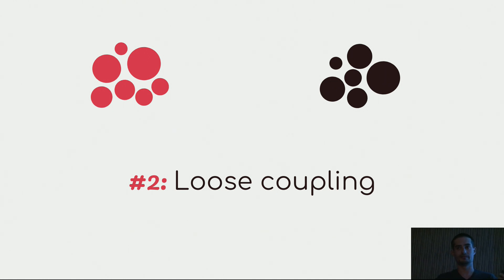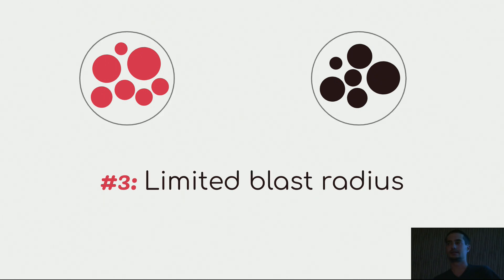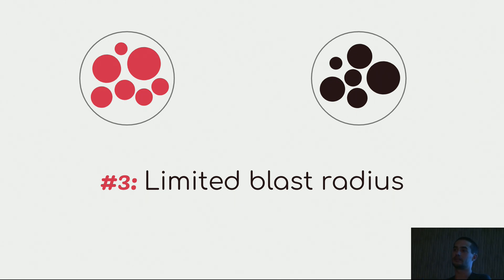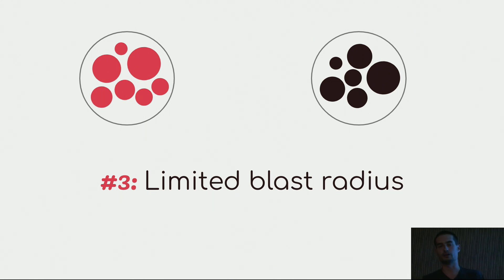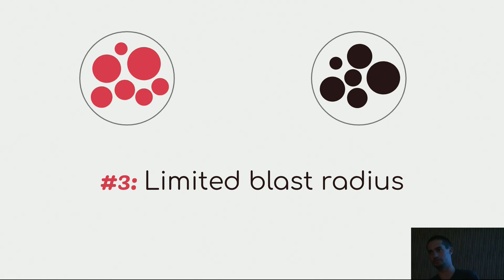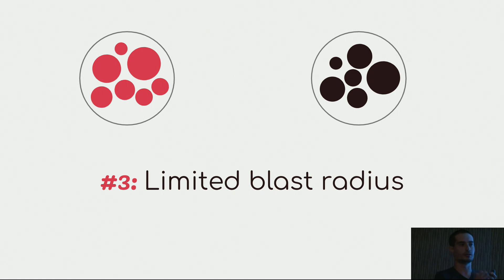When you have modules that start to look like modules, you need to surround them in some kind of circles — it's called a limited blast radius. Why? Because if one thing breaks due to some error, it shouldn't affect the whole application. Try to surround it with something that doesn't affect the whole app — maybe error boundaries or equivalent constructs in other frameworks.